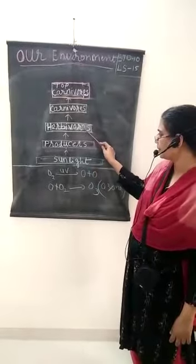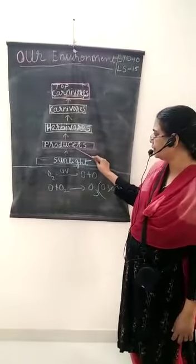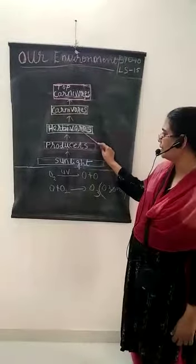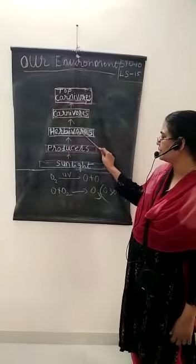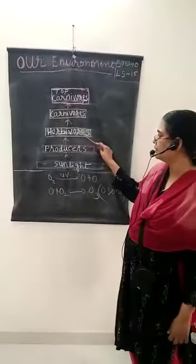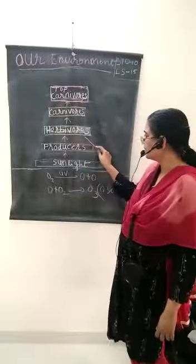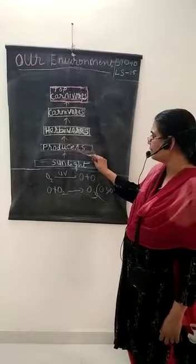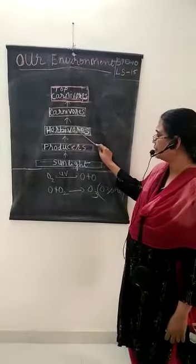When the herbivores feed on the producers, a part of energy will be utilized and another part of the energy will be sent back to the atmosphere. But herbivores get the maximum amount of energy from the producers.